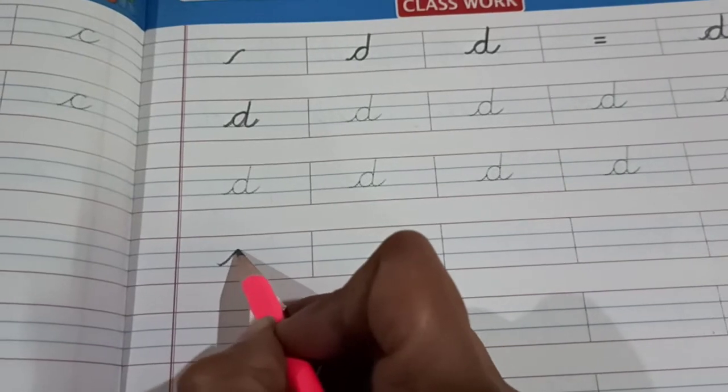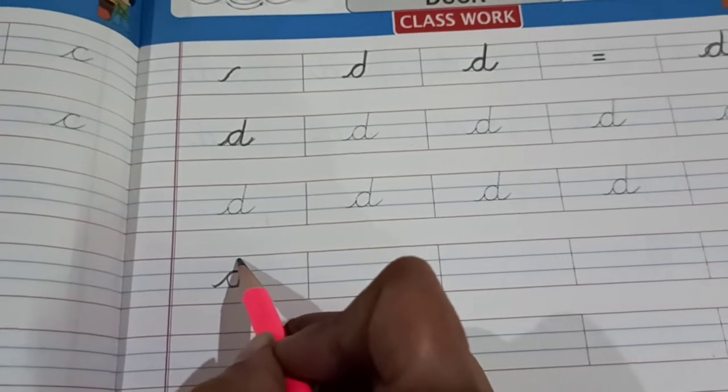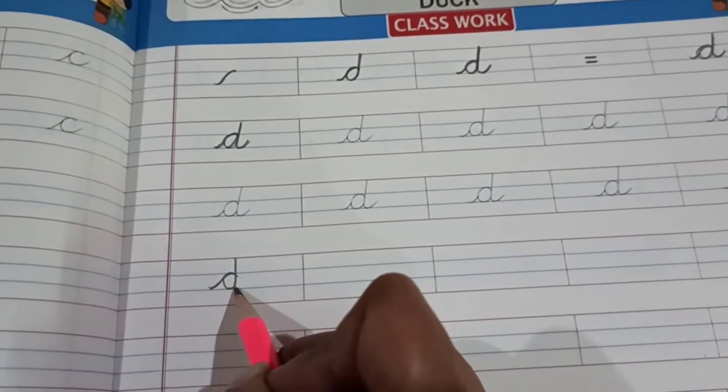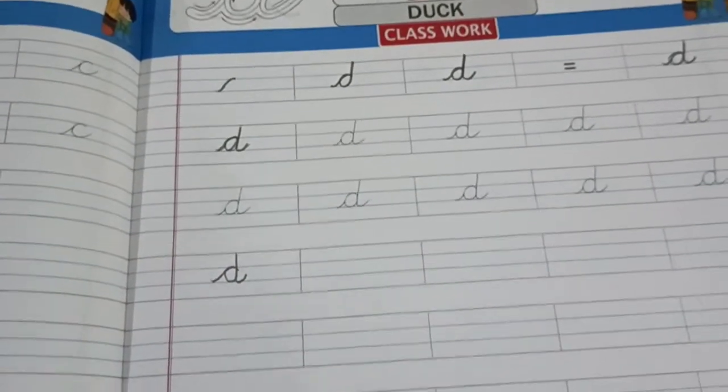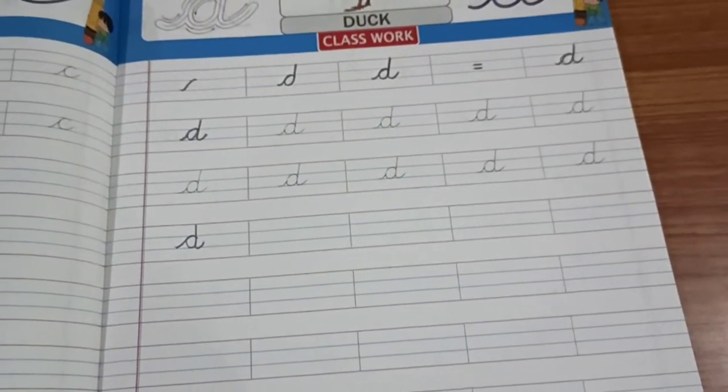Slanting curve, again come back, go towards, come down, one small tail. This is letter D. This is how you have to write the letter D.